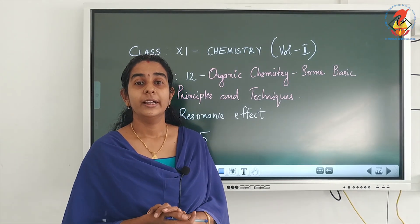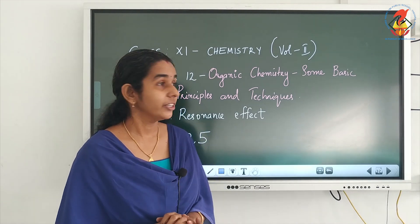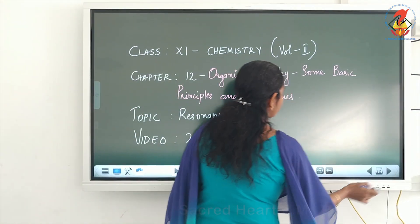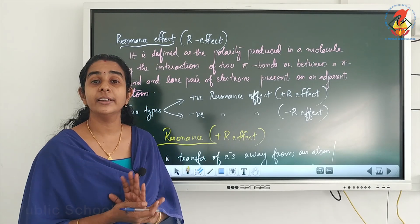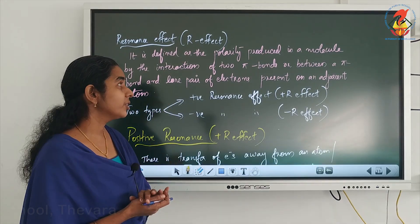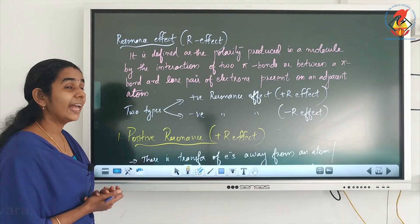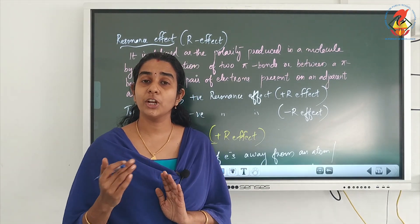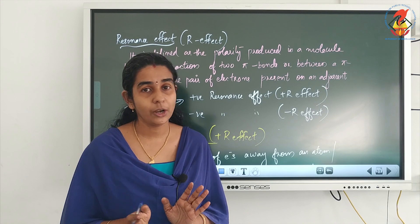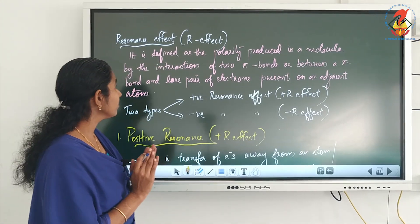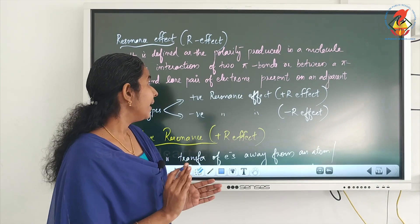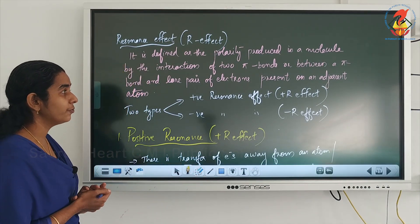Next we are going to study about the third permanent effect, that is the resonance effect or R effect. The resonance effect or capital R effect can be defined as the polarity produced in a molecule due to the interaction of either two pi bonds or between a pi bond and lone pair, because in resonance only pi electrons and lone pairs are involved.